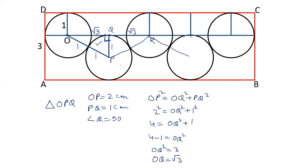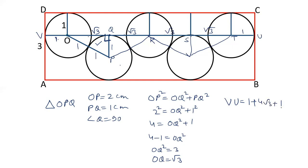Similarly, joining the remaining lines, each of these segments will be square root of 3 — giving us 1, 2, 3, 4 segments each of root 3. Naming the endpoints as V and U, O2V is 1 cm. We have to find the length of VU. From the diagram, VU equals 1 plus root 3 four times, and the last segment T2U equals 1 cm. So we have 4 root 3 plus 2.